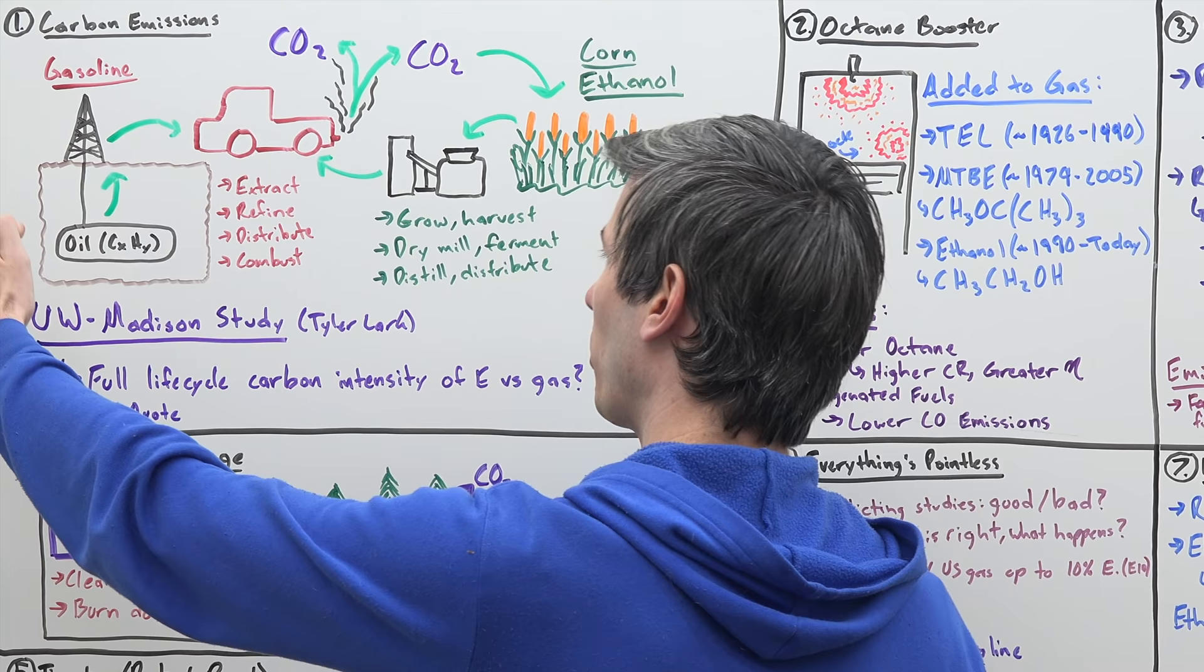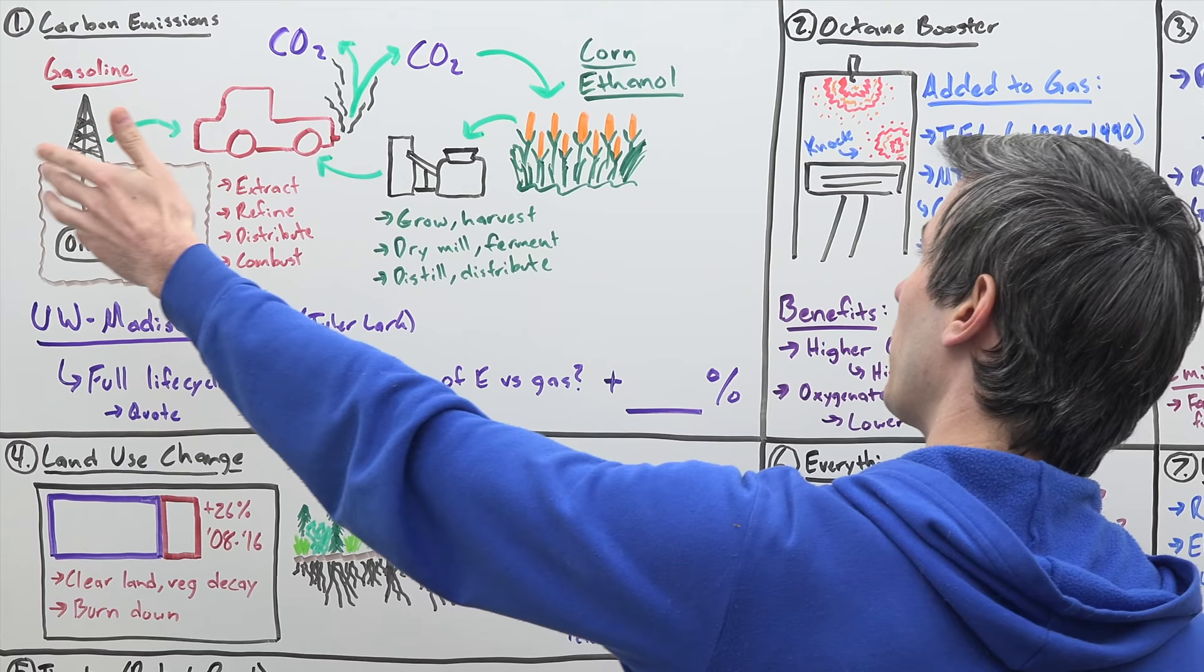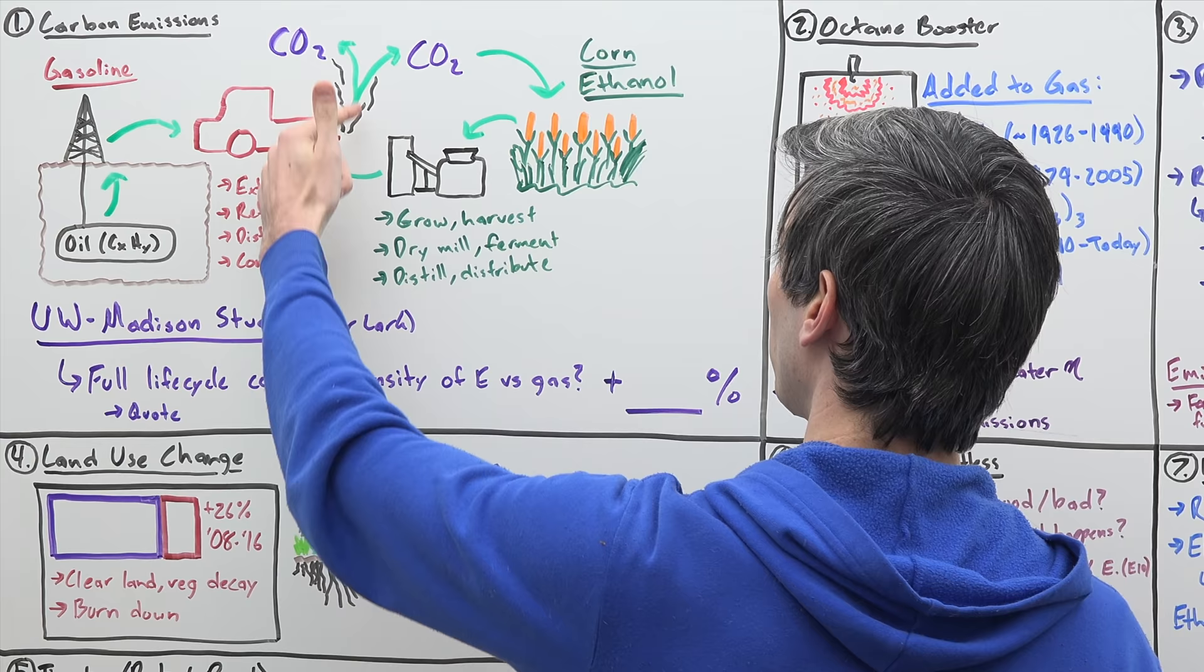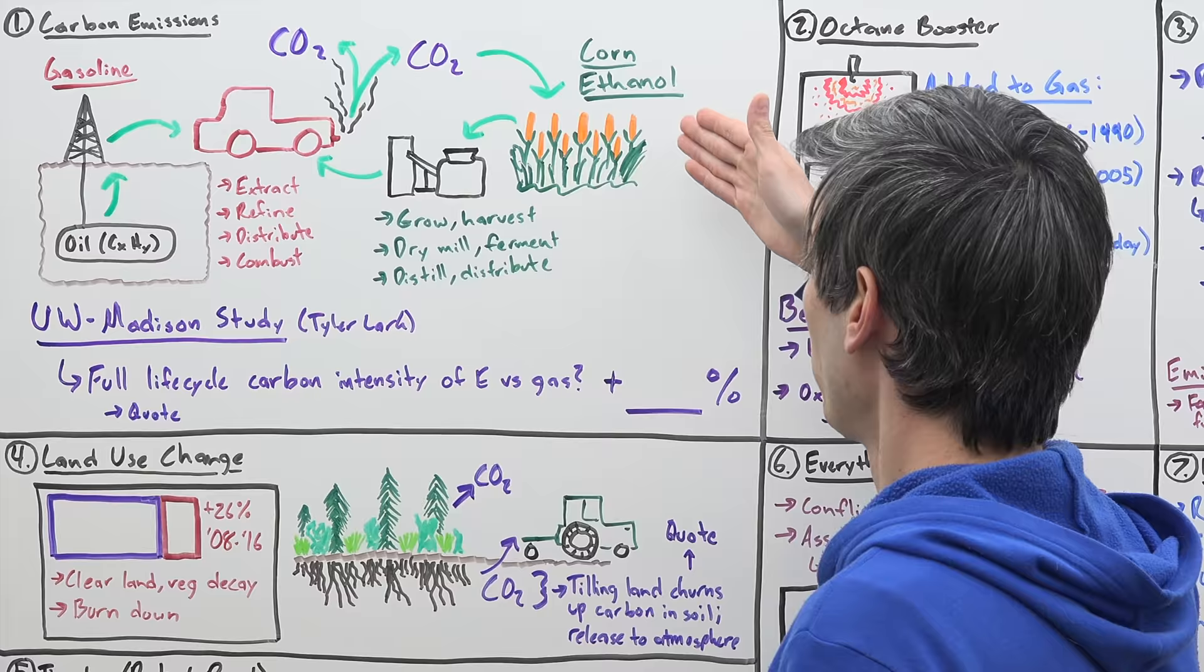For gasoline, we're pulling oil from underneath the ground, extracting that oil, refining it, using it as gasoline within our cars, and then burning that gasoline, which puts CO2 into the atmosphere. So you have a direct path, one-way direction of taking that carbon from beneath the ground and putting it in our air.